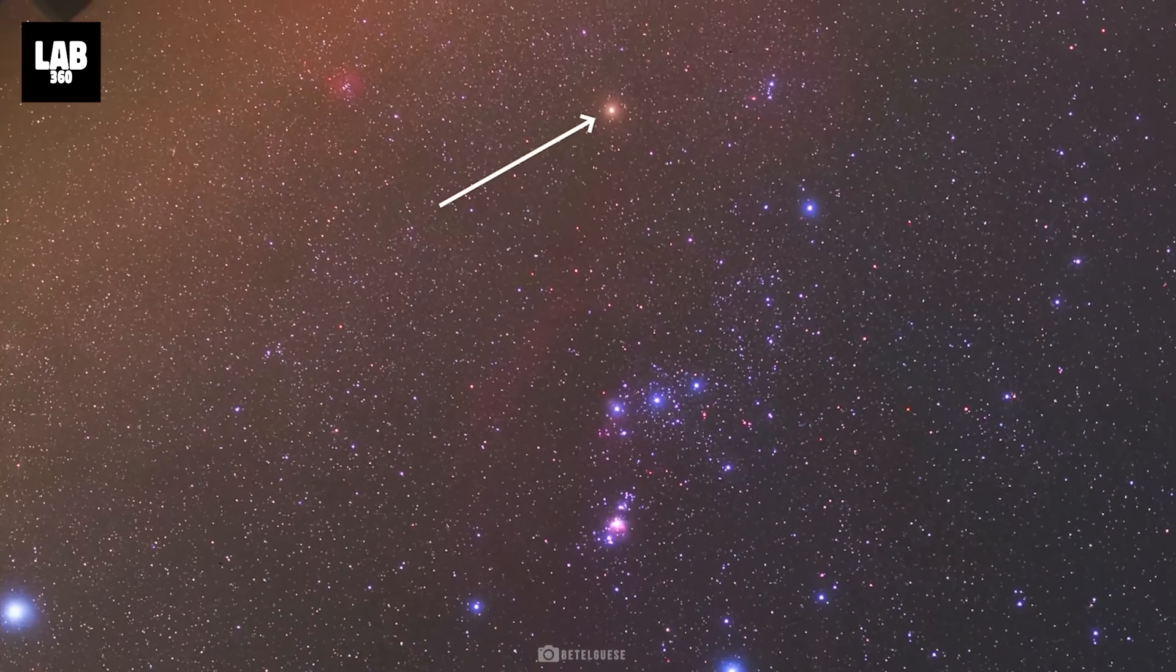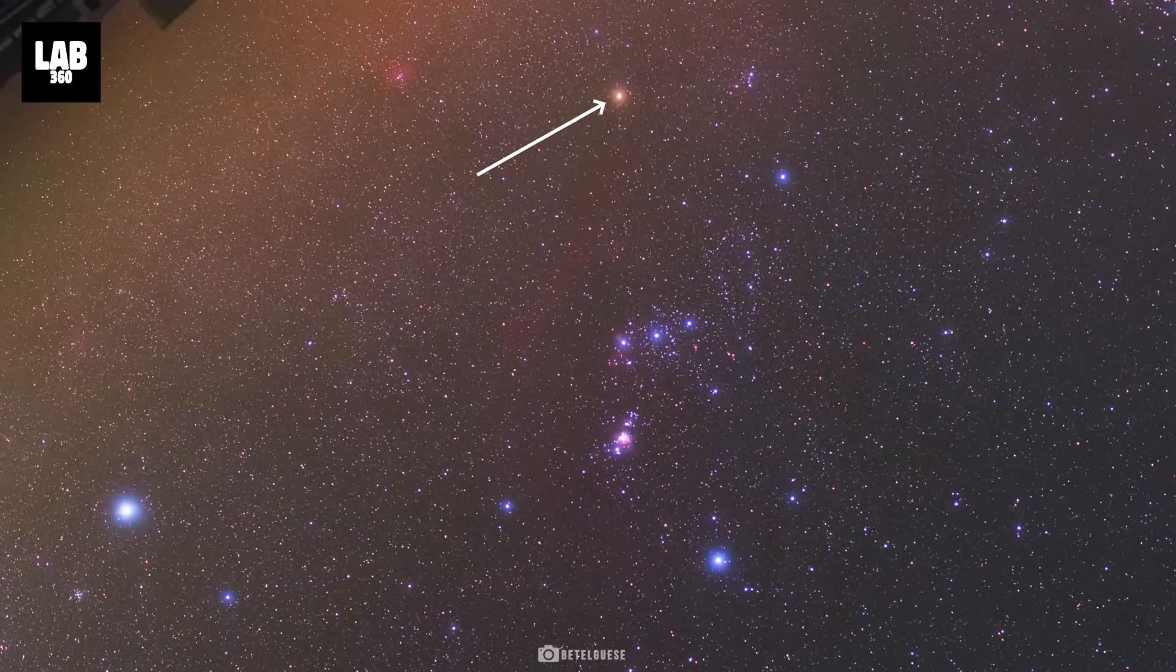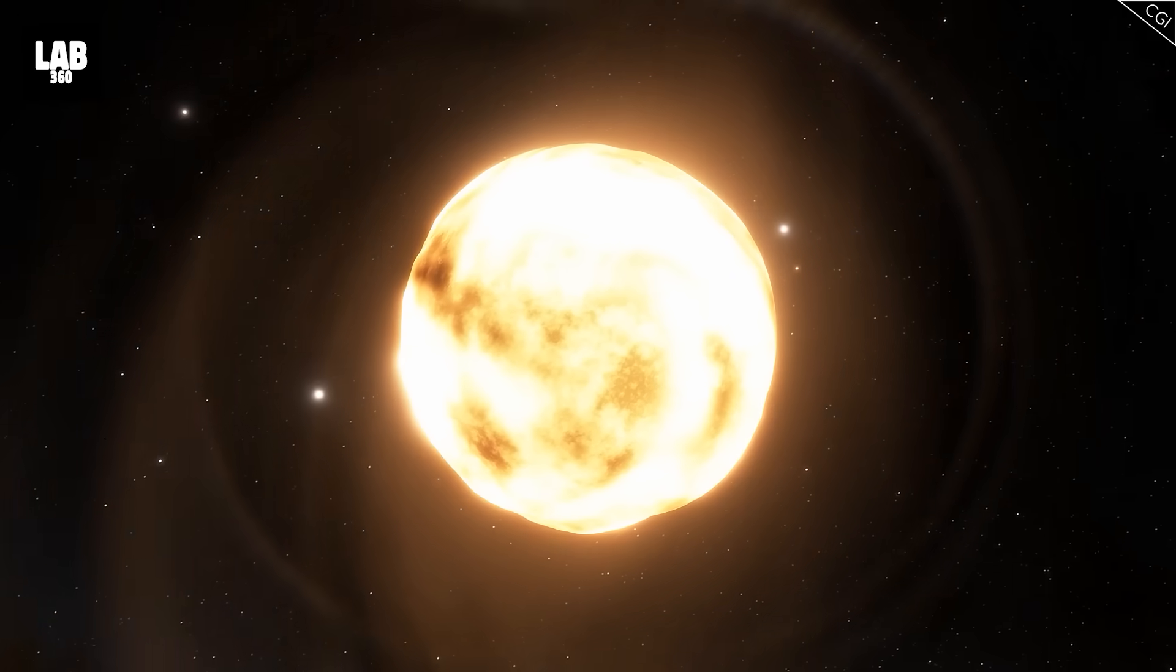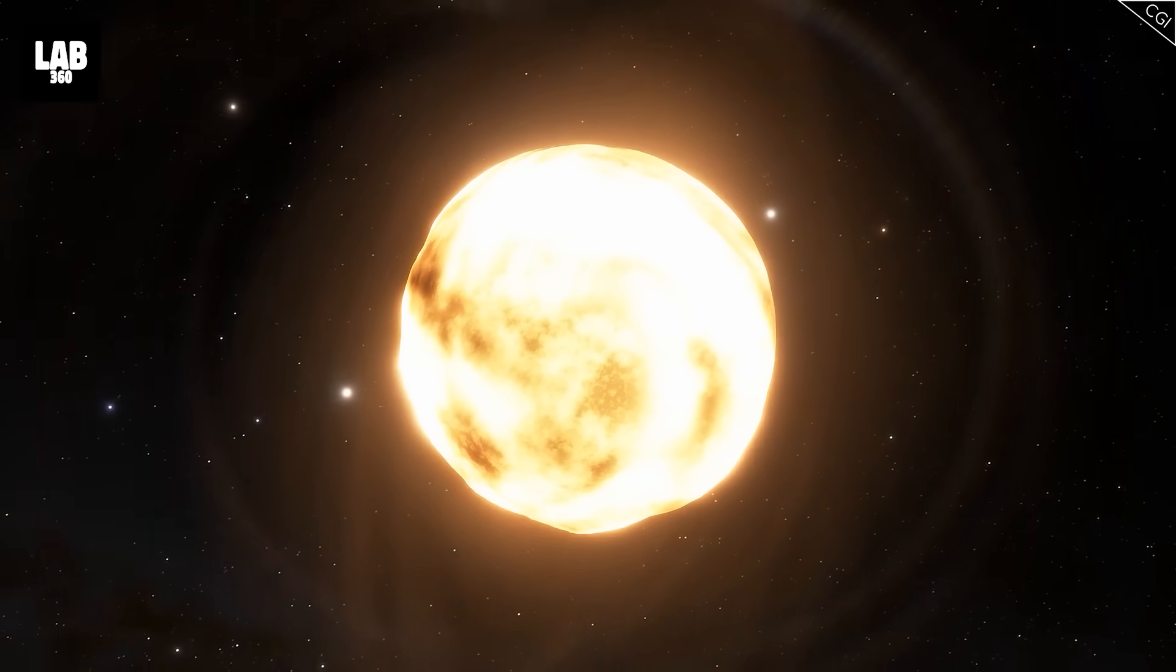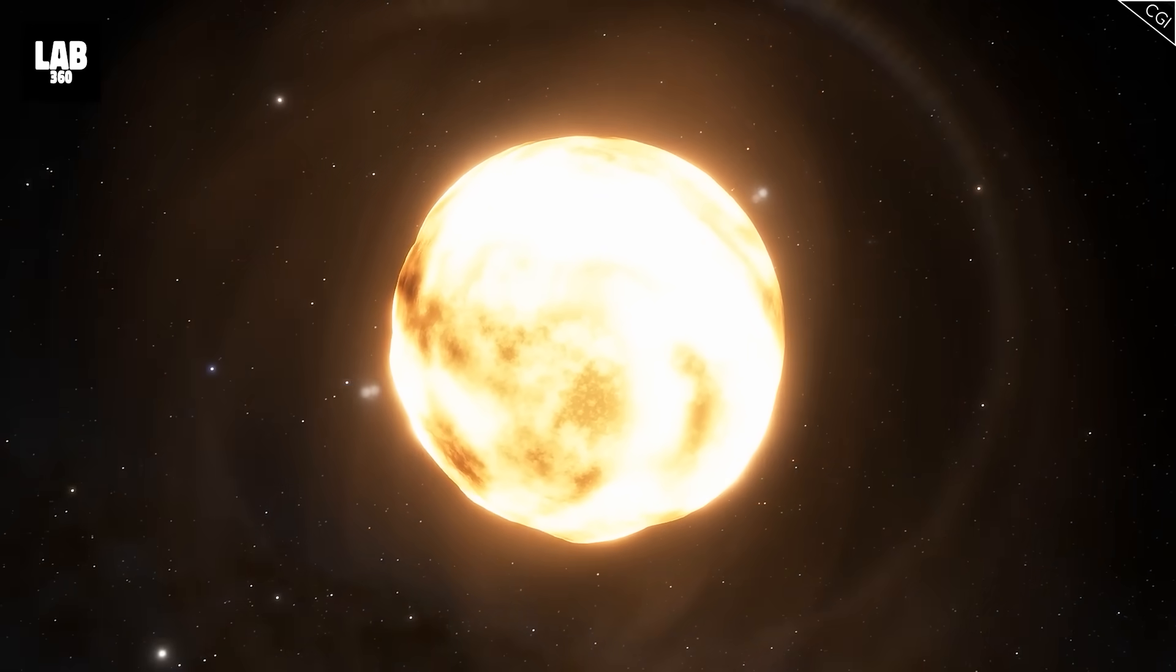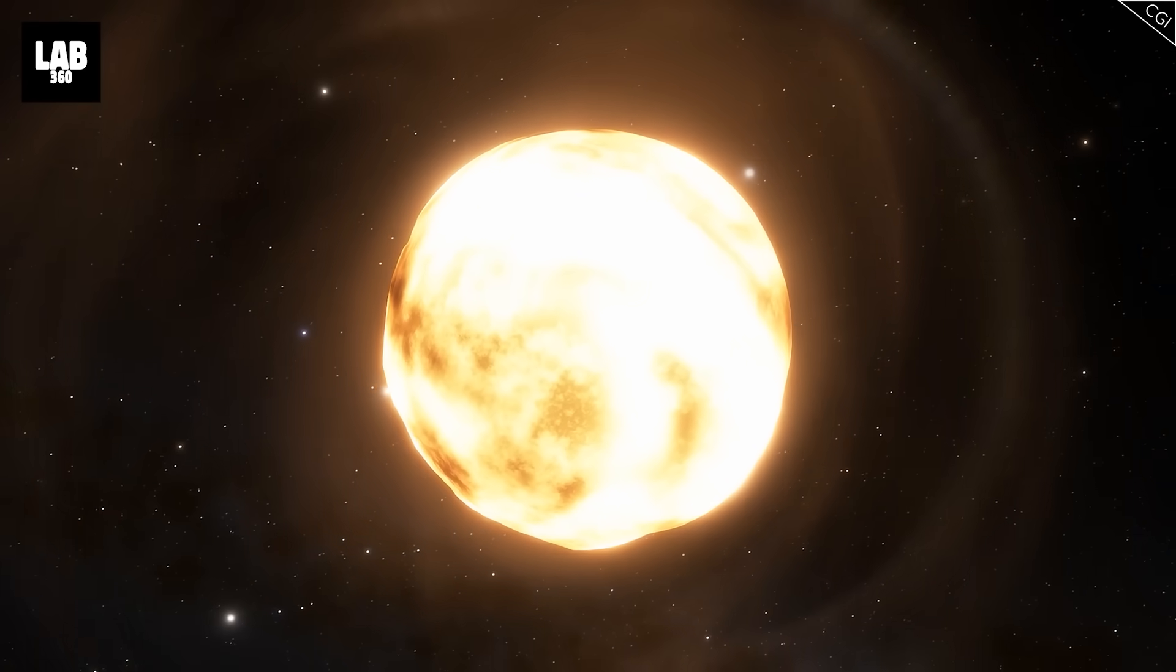Its vibrant red hue and prominent position have made it a favorite among stargazers and astronomers alike. But what makes Betelgeuse truly intriguing is its mysterious behavior. Astronomers call it a variable star because it pulsates.